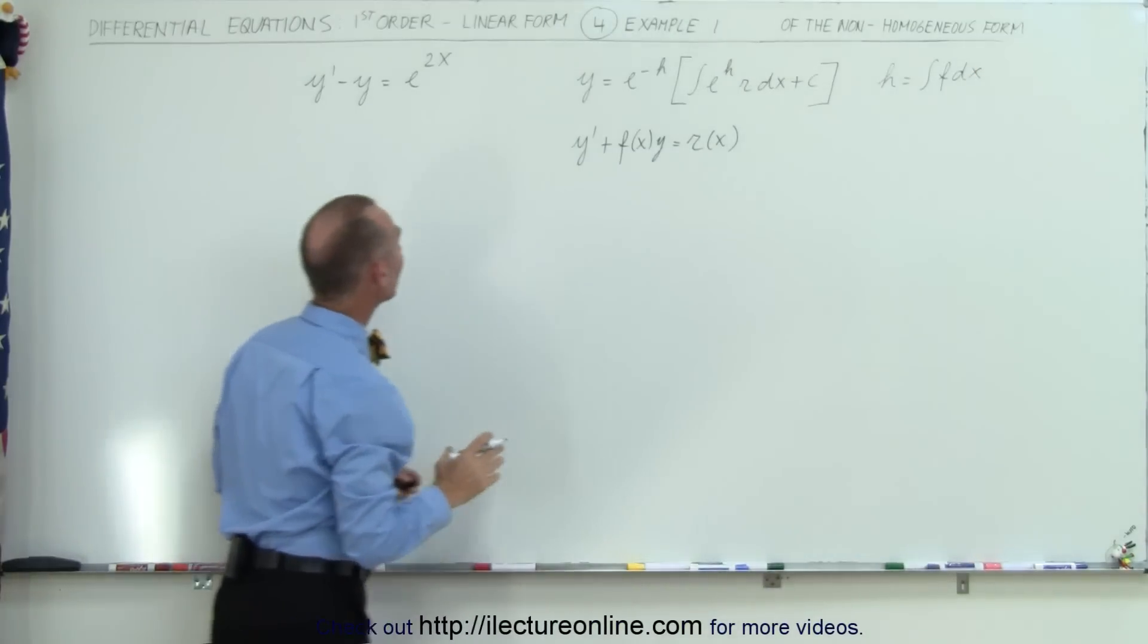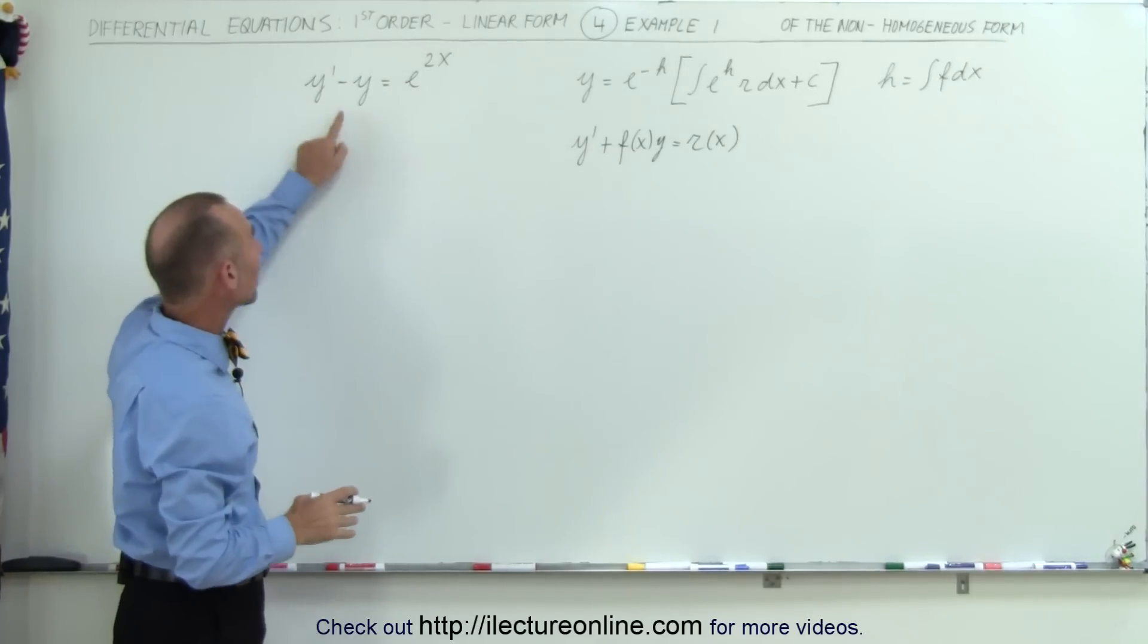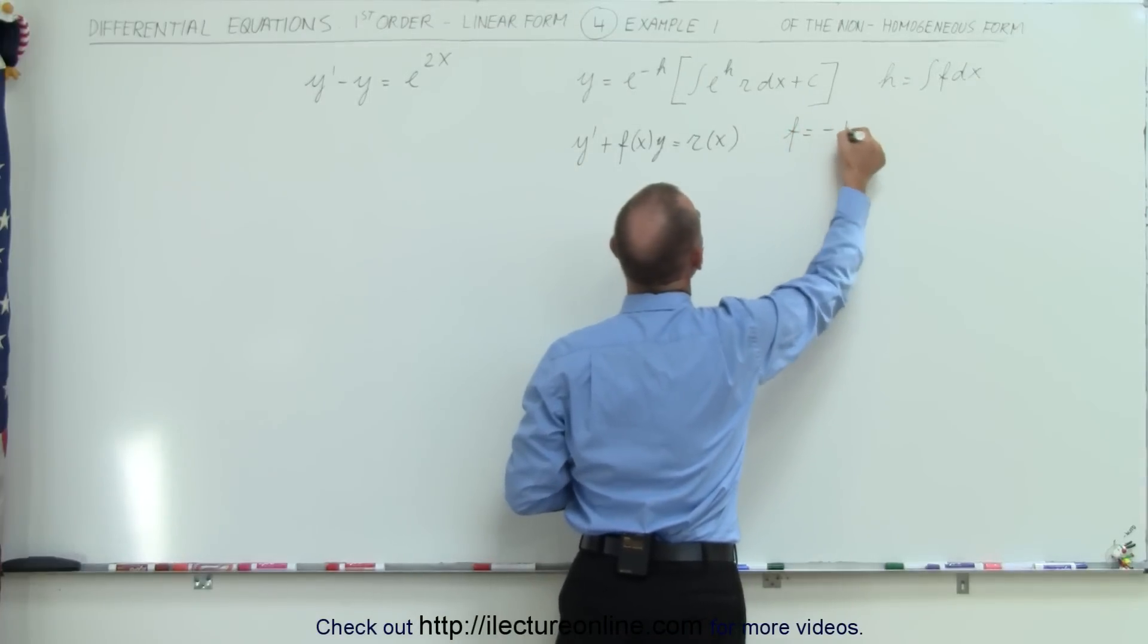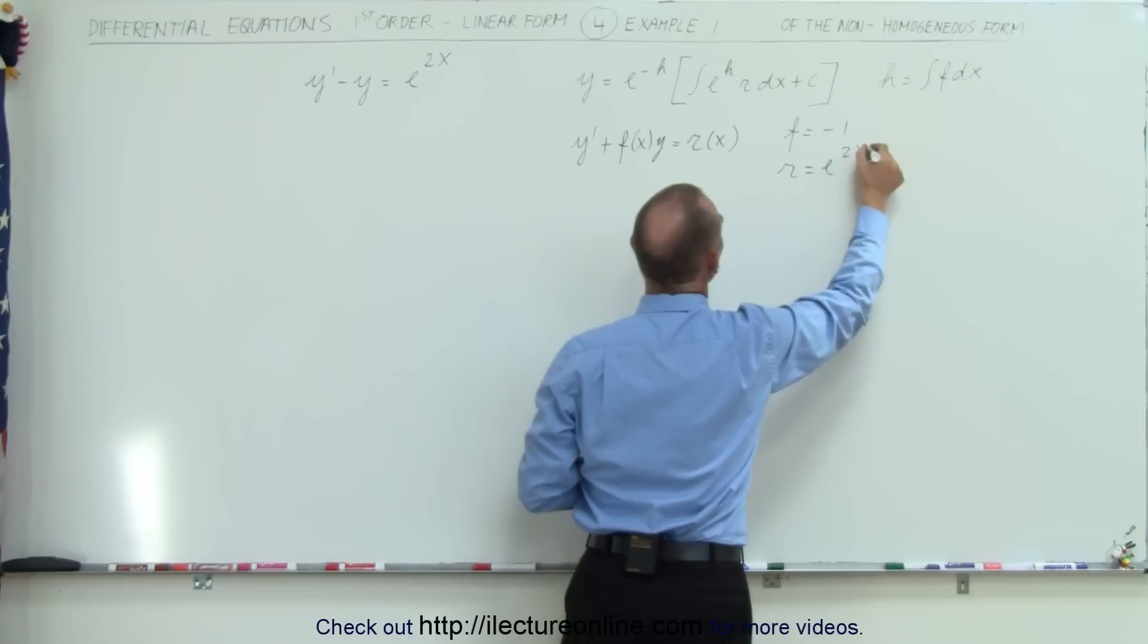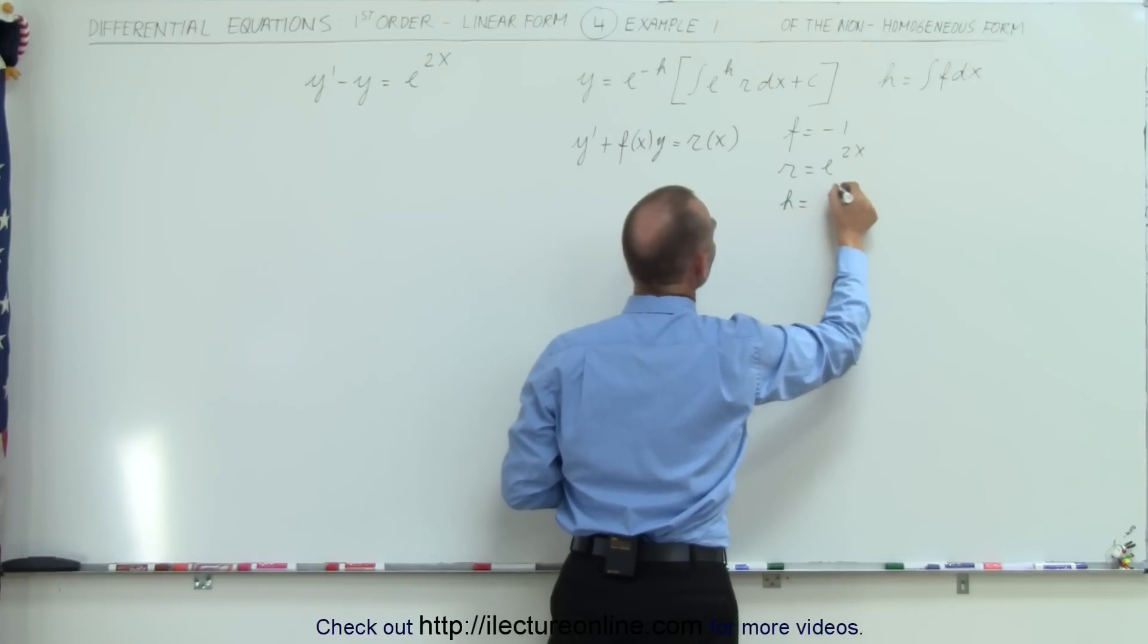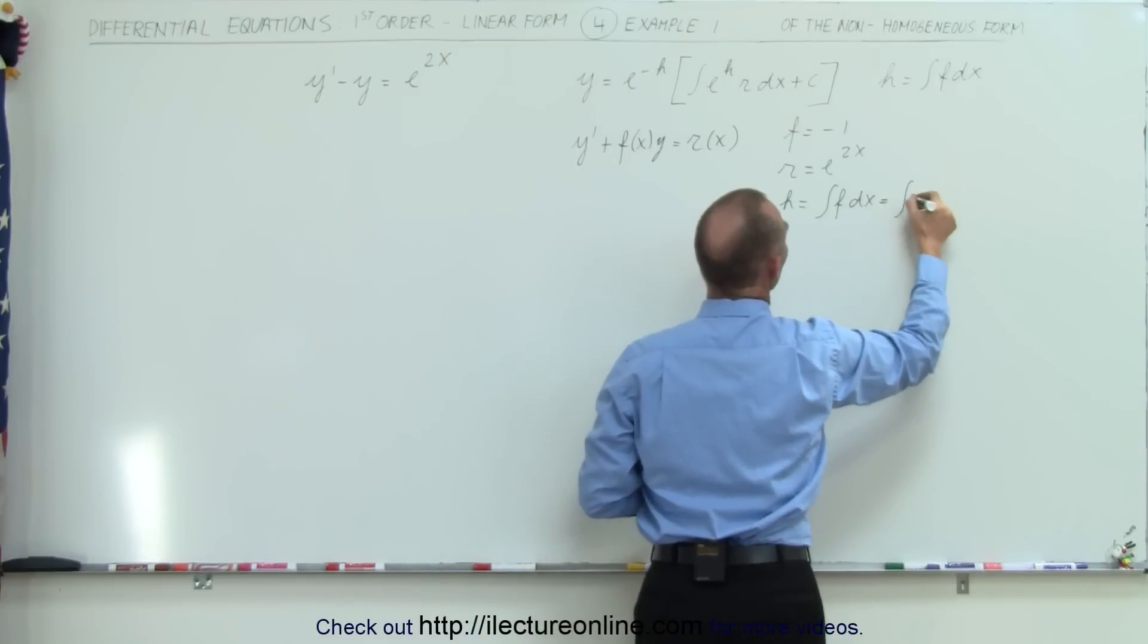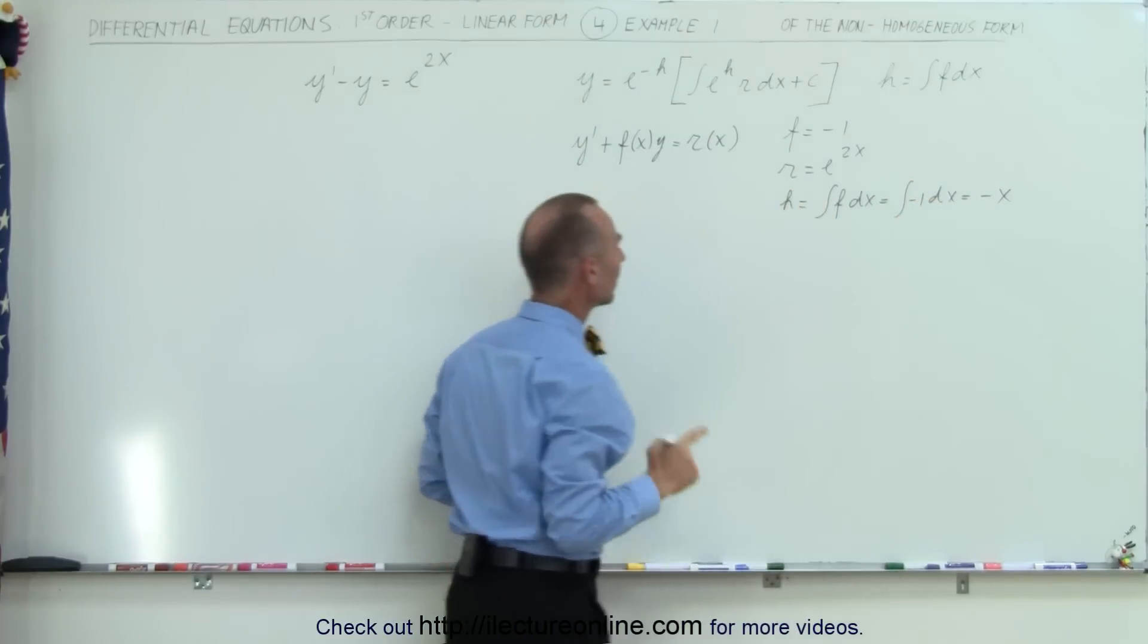Alright, so now all we have to do to find the solution to this differential equation is to recognize that in this case f is equal to negative 1, r is equal to e to the 2x, and h is equal to the integral of f dx, which means it's equal to the integral of minus 1 dx, which is equal to minus x.